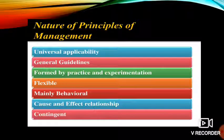There are seven natures of principles of management. First is universal applicability. Second, general guidelines. Third, formed by practice and experimentation. Fourth, flexible. Fifth, mainly behavior. Sixth, cause and effect relationship. Seventh, contingent.